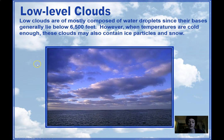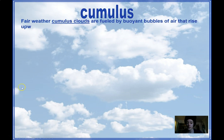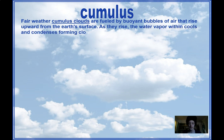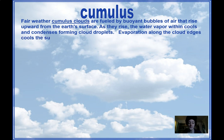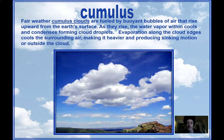Low clouds are mostly composed of water droplets since they're lower in the atmosphere and not usually as cold. They might sometimes get ice and snow if it gets colder. Cumulus clouds are the classic style of fluffy cloud — there's an example of one on screen right now.